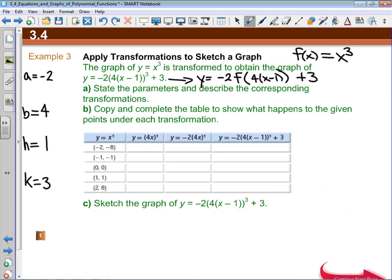If A is negative 2, we need to reflect over the x-axis and we also need to vertical stretch by 2. If B is 4, we need to horizontally stretch by 1 quarter. If H is 1, we're going to horizontally translate 1 to the right. And if K is equal to 3, we're going to vertically translate 3 up.